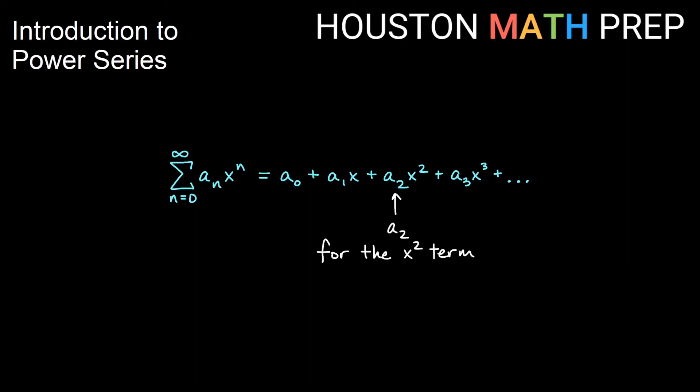So you can basically see the subscript for a. If it's a sub 3, then that's the x cube coefficient. So that's an easy way to tell which coefficient we're talking about whenever we have a sub something. So a sub 10 is going to go with the x to the 10th term, for example.